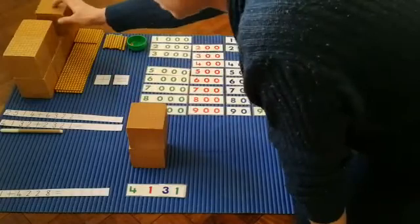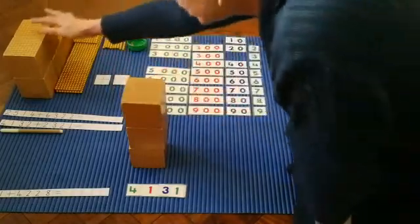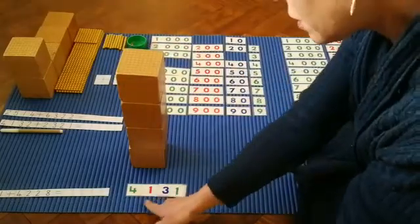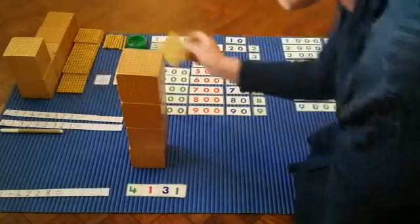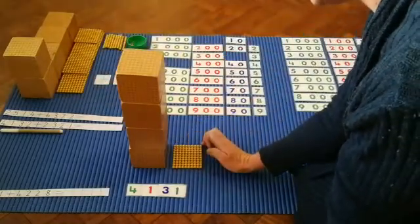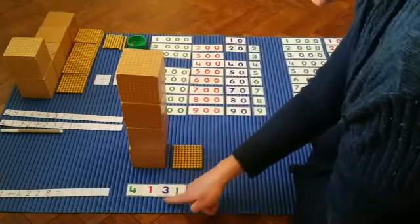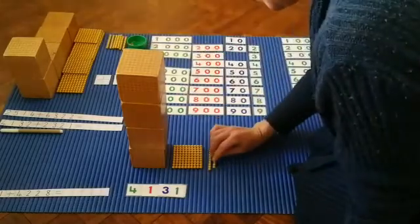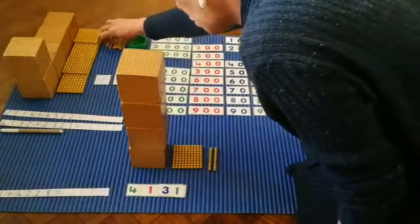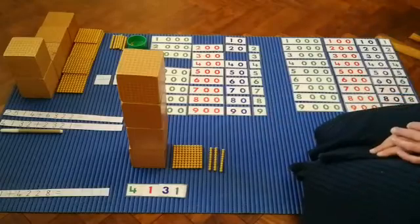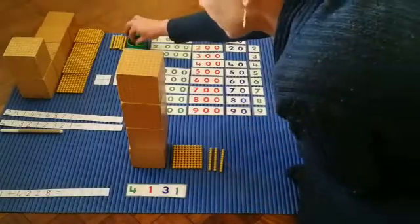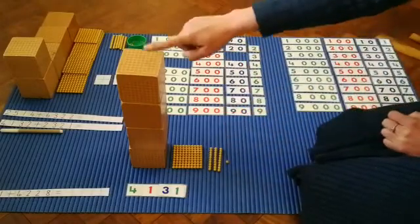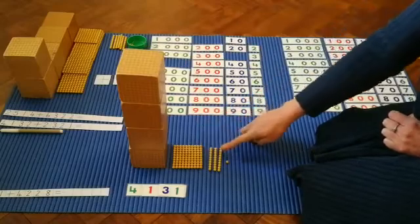Four thousands - 1000, 2000, 3000, 4000. My hundreds - one hundred. My tens - one ten, two tens, three tens. And then one unit. So I have made four thousand one hundred and thirty one.